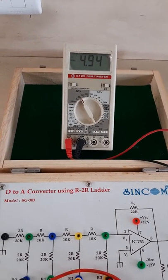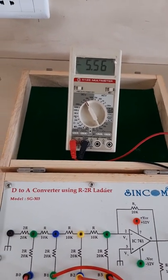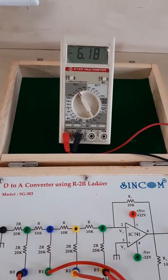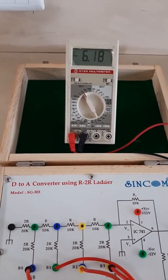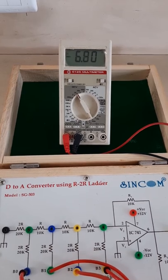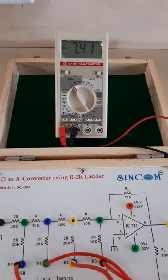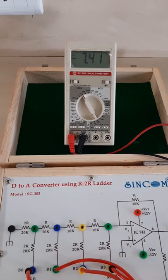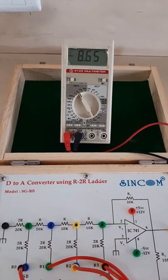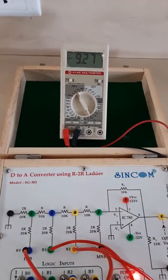After that 1001, the output is 5.56. After that 1010, the output is 6.18. After that 1011, the output is 6.79. After that 1100, the output is 7.41. After that 1110, the output is 8.65. And the last condition is all inputs are 1, that is 1111, and for that output is 9.27.